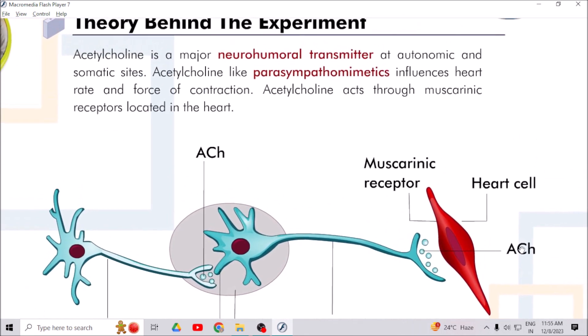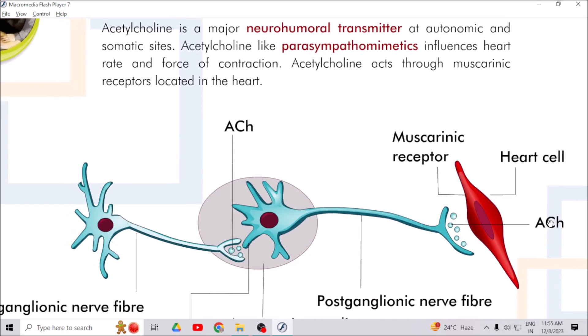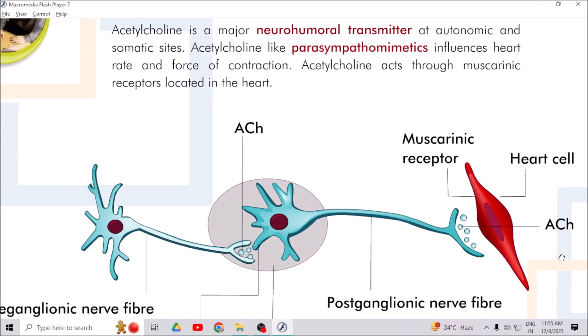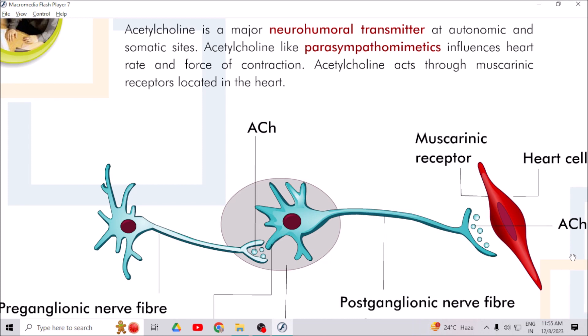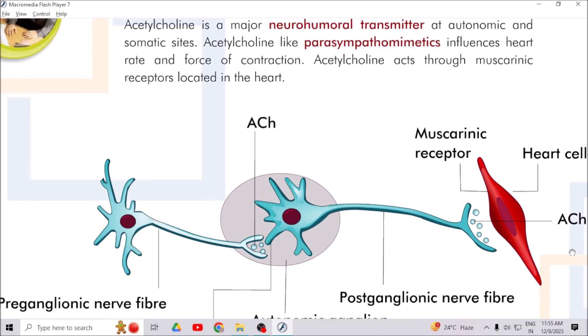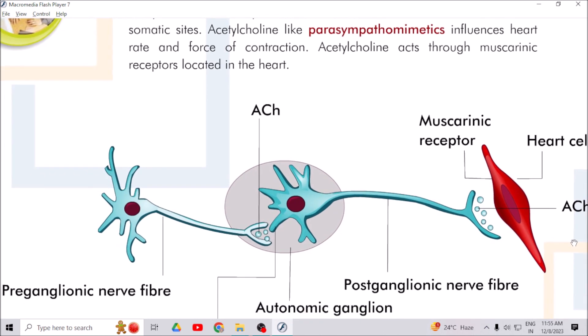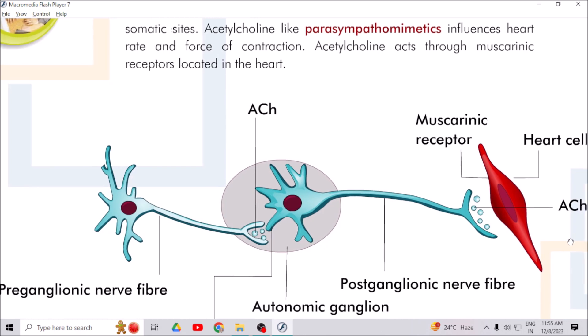Acetylcholine is a major neurohumoral transmitter at autonomic and somatic sites. Acetylcholine, like parasympathomimetics, influences heart rate and force of contraction. Acetylcholine acts through muscarinic receptors located in the heart.